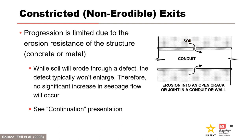For constricted exits, progression is limited due to the erosion resistance of the structure — concrete or metal. The likelihood of continuation can be determined using the constricted exit worksheet in the RMC filter evaluation continuation toolbox, and the criteria for that evaluation is provided in the continuation presentation.